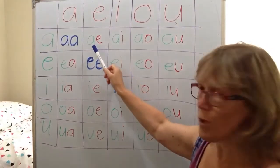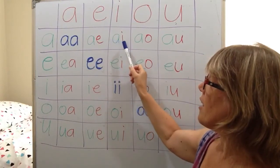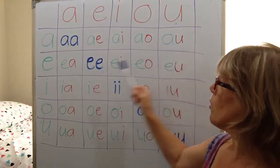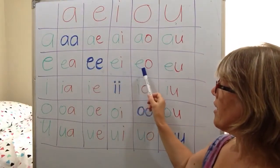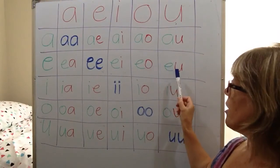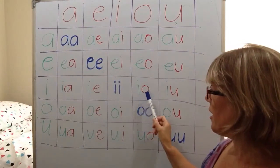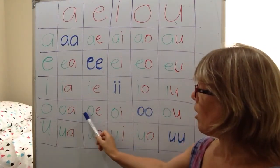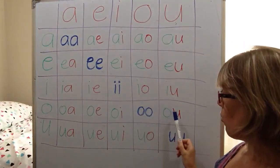Twinkle Twinkle Little Star. A, E, I, A, E, I, A, O, A, U. E, A, E, E, E, O, E, U. I, A, I, E, I, I, O, I, U. O, A, O, E, O, I, O, U. U, A, U, E, U, I, U, O, U, U.